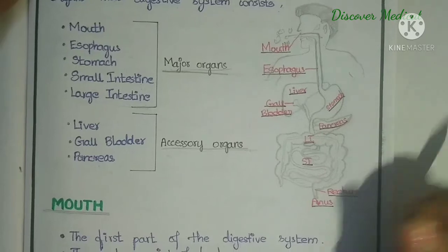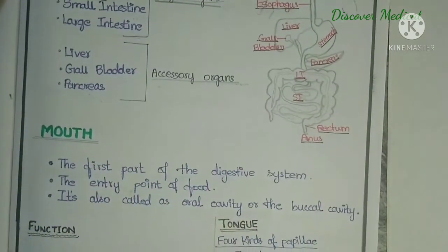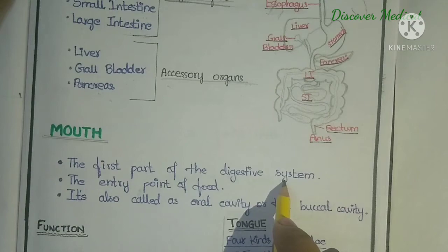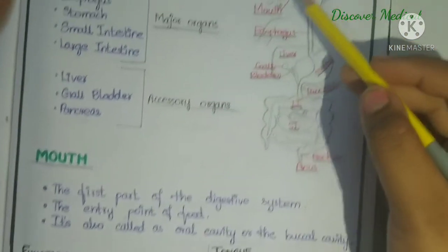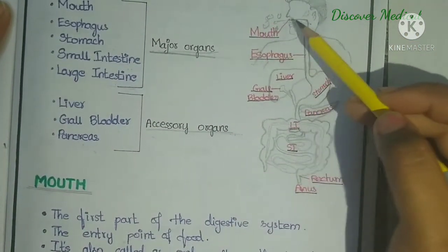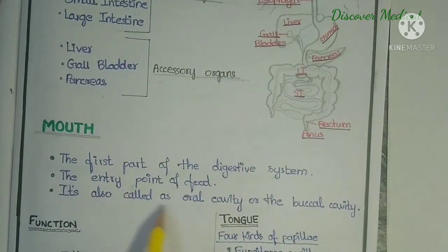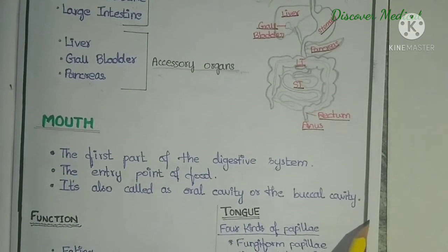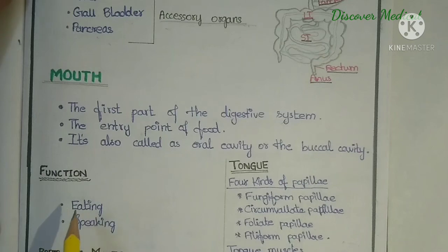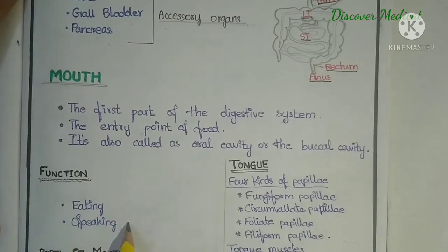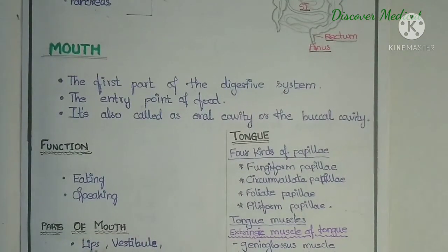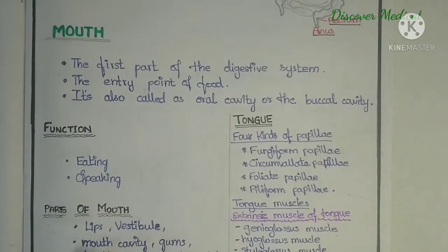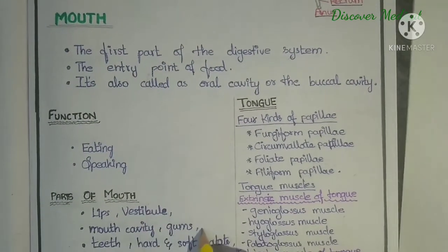The mouth is the first part of the digestive system. It is the entry point of food, also called the oral cavity or buccal cavity. Its functions include eating and speaking. The parts of the mouth include lips, vestibule, mouth cavity, and gums.